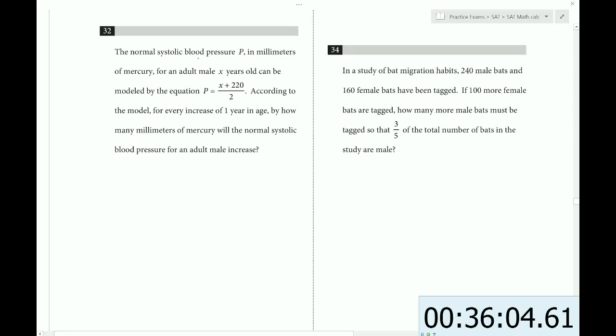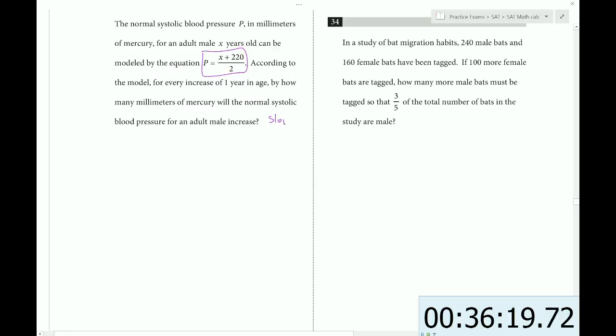The normal systolic blood pressure for an adult male x years old can be modeled by this equation. According to the model, for every increase of one year in age, by how many millimeters of mercury will the blood pressure increase? So they're talking about the slope. For every one year increase in x, what would happen to y? So if we were to write this out for each one separately, we get x/2 + 220/2. We could do that because it's a common denominator. So then this reduces to 110.